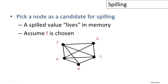In this situation, what we're going to do is pick a node as a candidate for spilling. This is a temporary that we think we may have to assign to a memory location rather than to a register. Let's just assume, for the sake of this example, that we pick F.